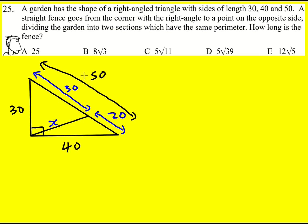If you don't quite see that straight away then you can always call this one y and this would be 50 minus y. Then we can create an equation. It's going to be that x plus 30 plus 50 minus y equals x plus y plus 40.